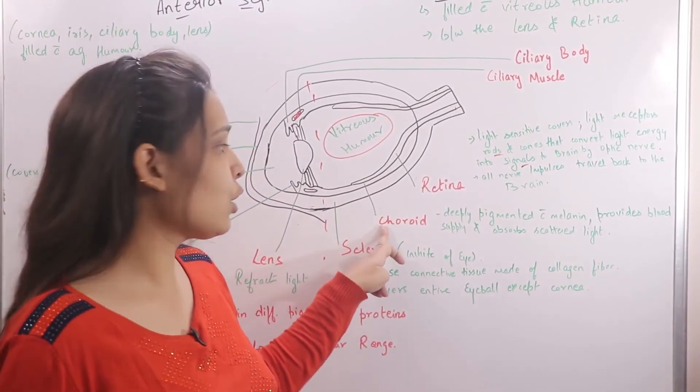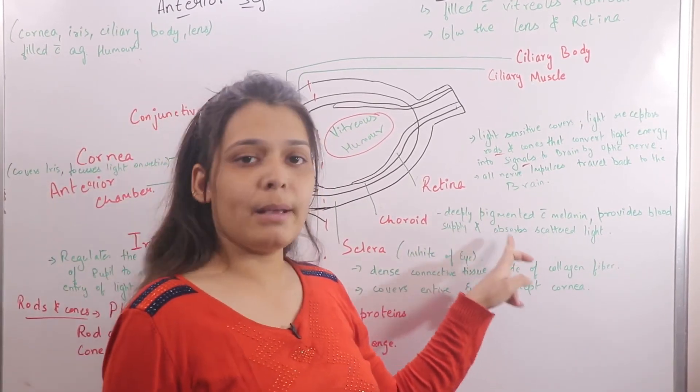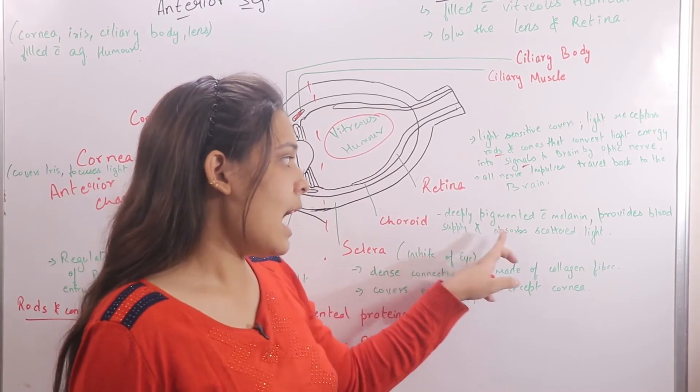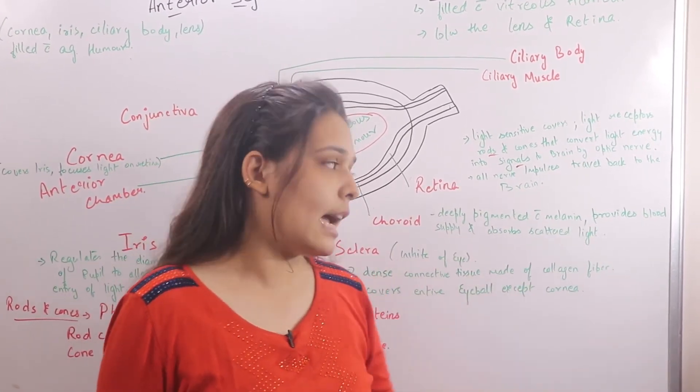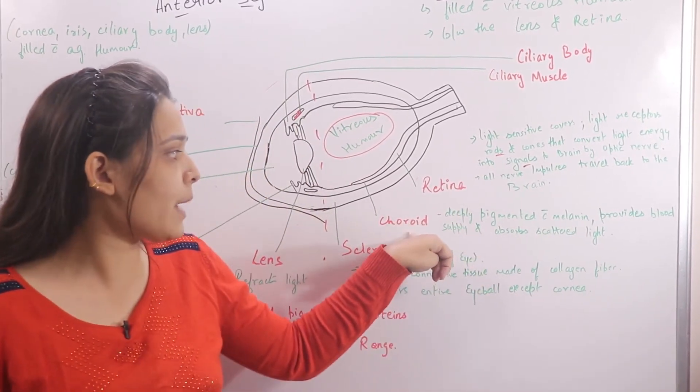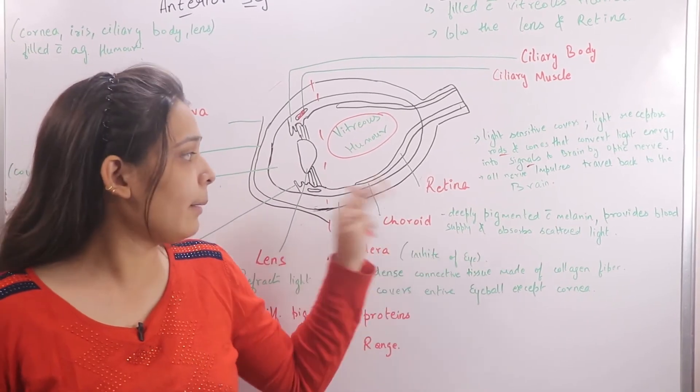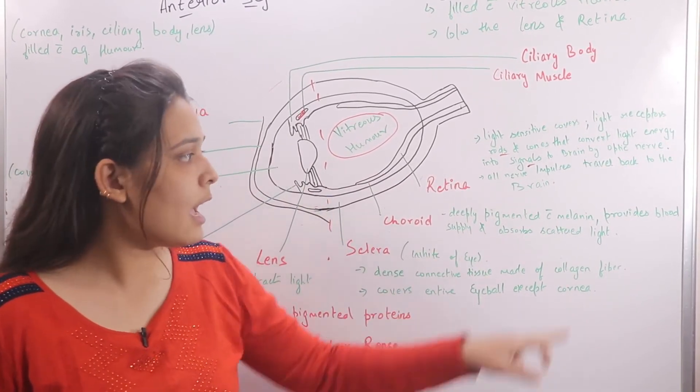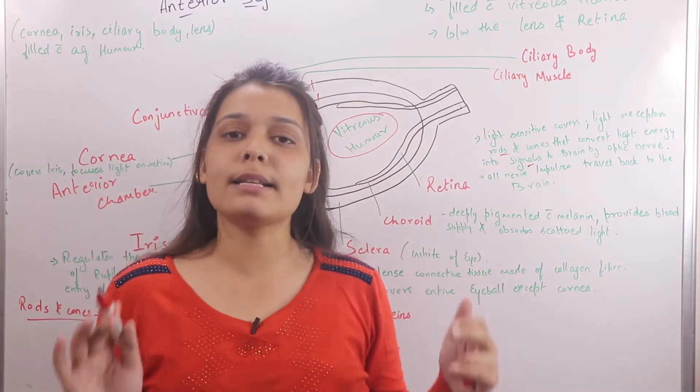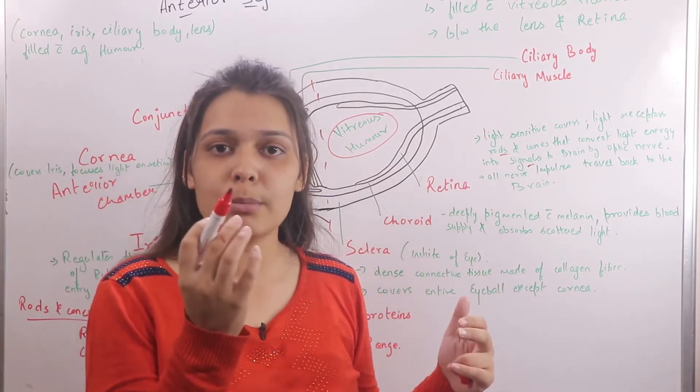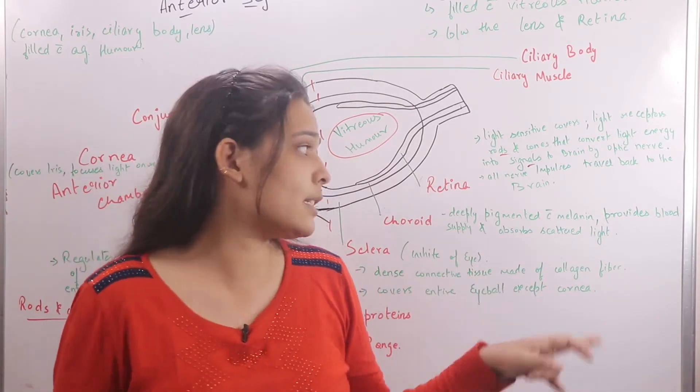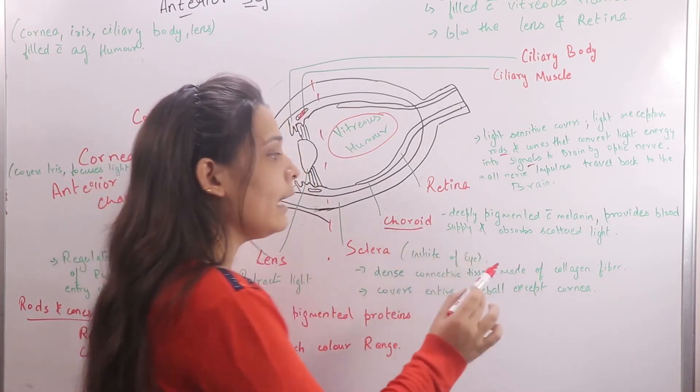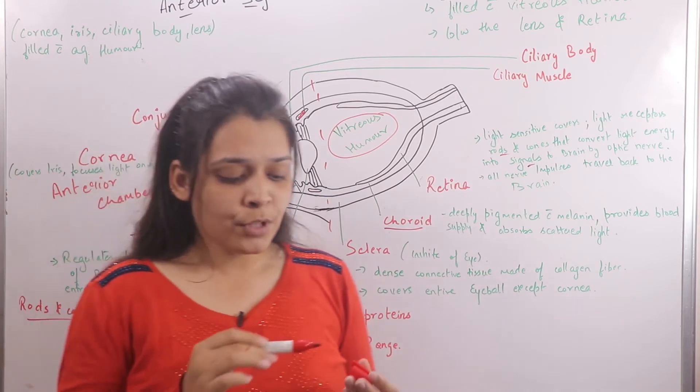Next, our choroid. It is deeply pigmented with melanin, provides blood supply, and absorbs scattered light. The choroid provides blood supply to the eye and absorbs scattered light.